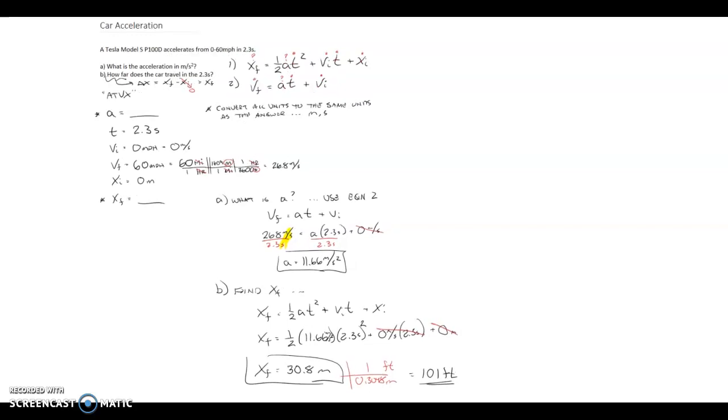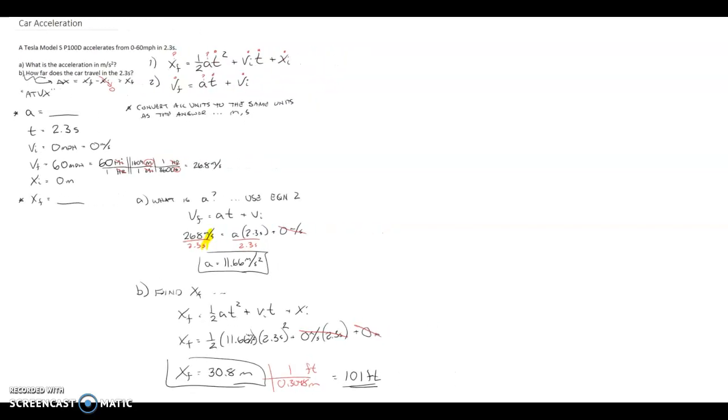Just walking you through an example here where we can take a car's spec for 0 to 60 and now translate that into some physics terms of its acceleration and how far it has traveled in that amount of time.